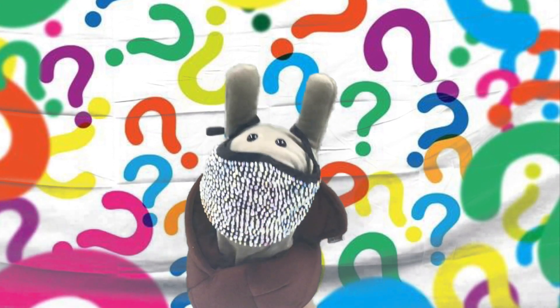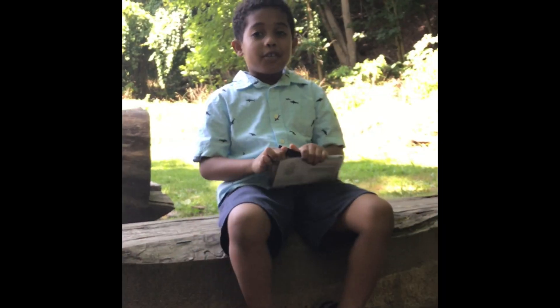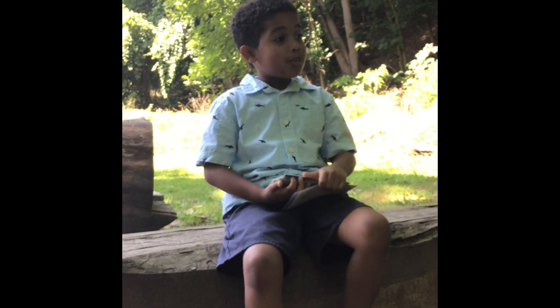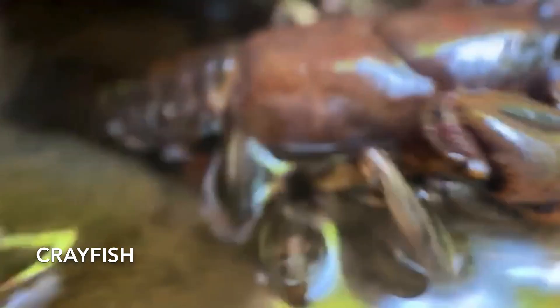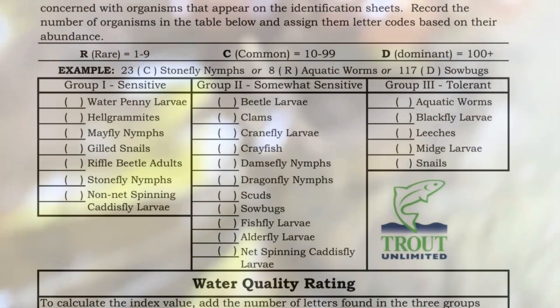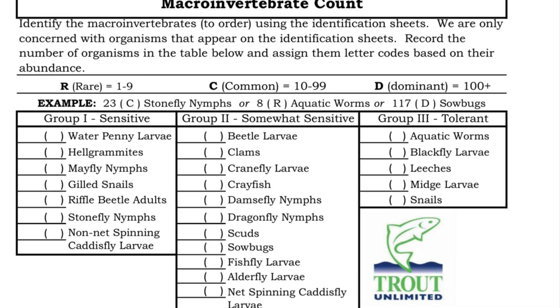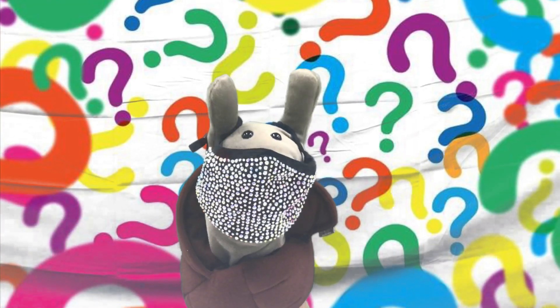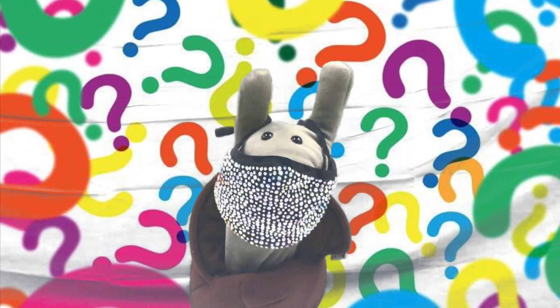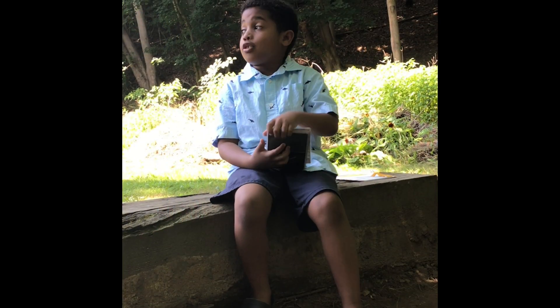What's your favorite macroinvertebrate? A crayfish. Why? Because it uses its tail to move quickly in water. Finally, we use a mathematical equation to determine the health of the stream. Why are macroinvertebrates useful? Because you can use them to tell the water quality — if it's good or bad.